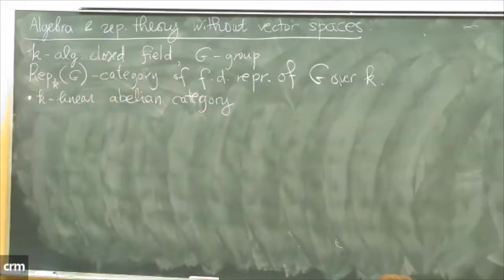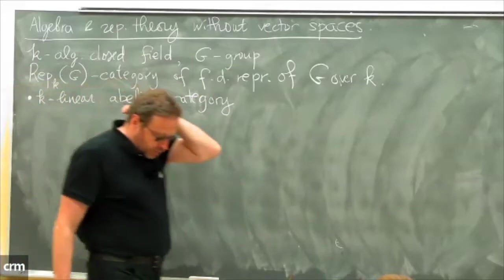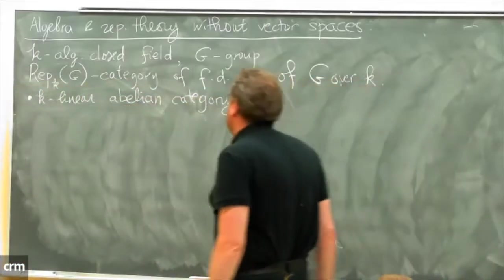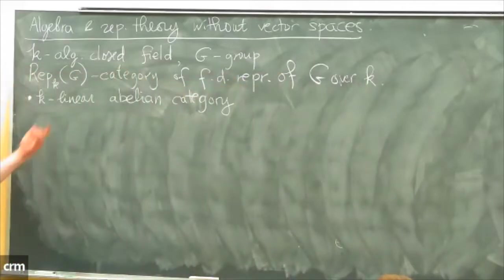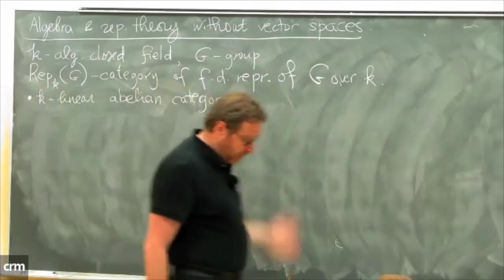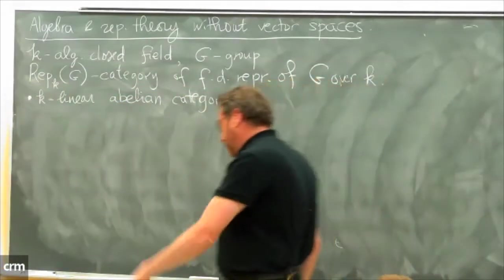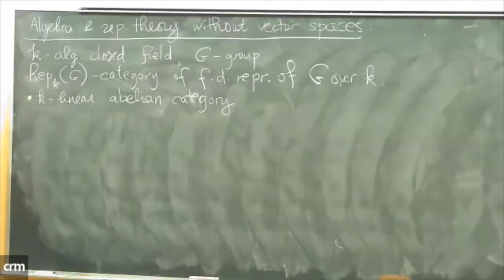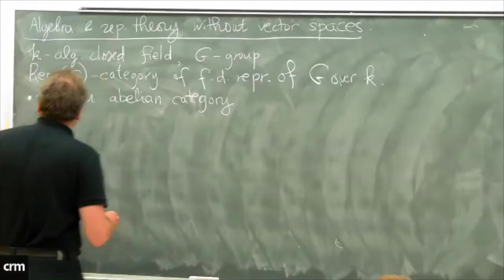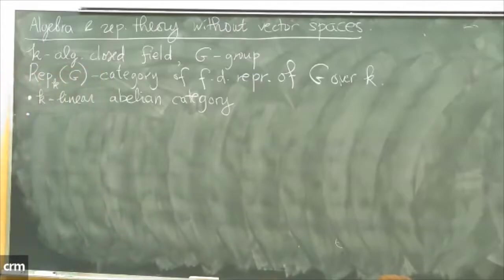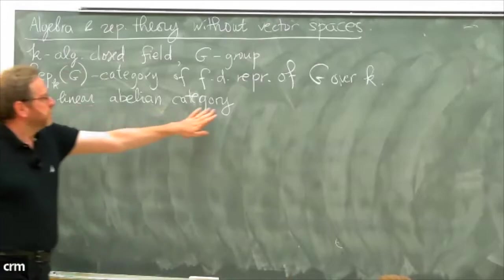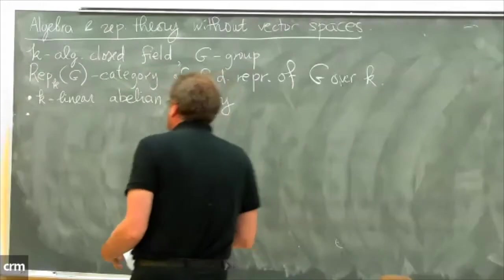k-linear means that morphisms in this category form a k-vector space, and composition of morphisms is bilinear. Abelian category means a bunch of properties, such as existence of direct sums, existence of the zero object, existence of kernels, cokernels, and images of morphisms. I will not spell this out completely because I need another property.